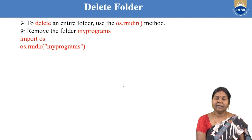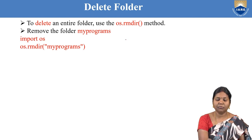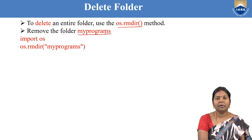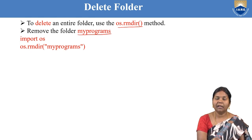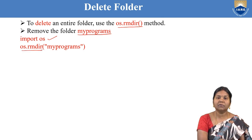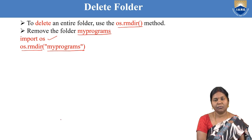Instead of deleting a single file, if you want to delete an entire folder, you use the os.rmdir() — remove directory — method. For example, if you have a folder called 'my_programs' containing a set of files and you want to remove it, you write 'import os' and then 'os.rmdir("my_programs")'. This will remove the entire folder from your system.